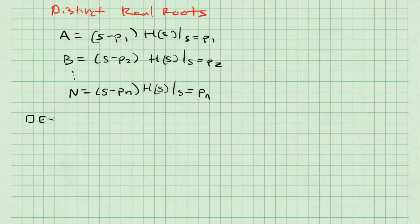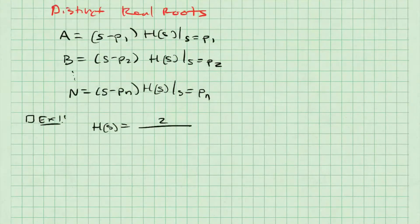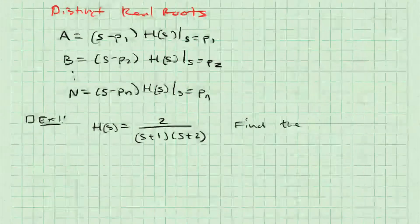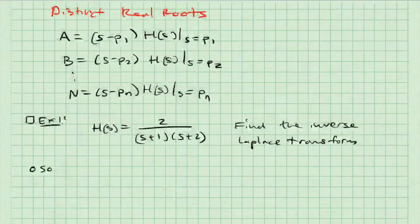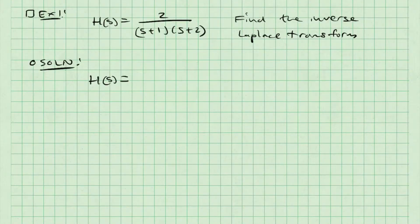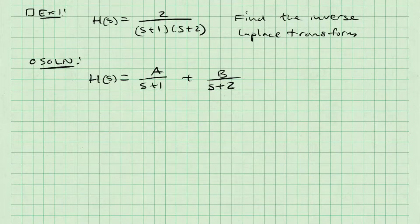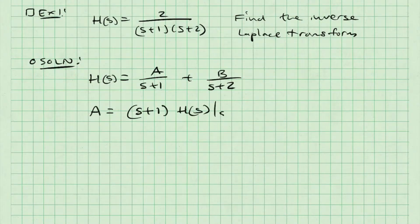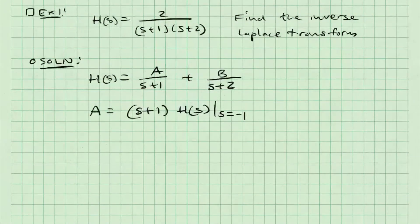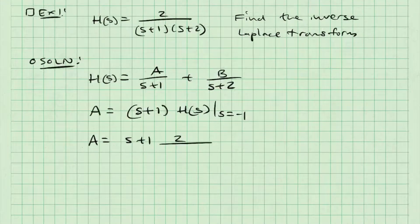To help understand this, let's take an example. H of S is going to be 2 over (S plus 1)(S plus 2), and I want to find the inverse Laplace transform. H of S can be decomposed into A over S plus 1, plus B over S plus 2. Using the formulas established above, I'm going to solve for A and B. A is going to be equal to S plus 1 multiplied by the original fraction H of S, which is 2 over (S plus 1)(S plus 2).